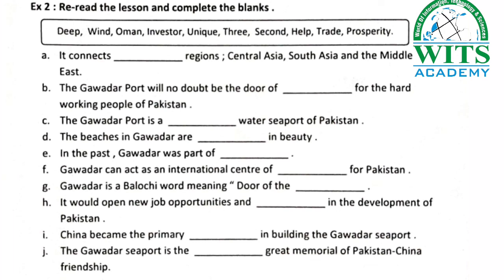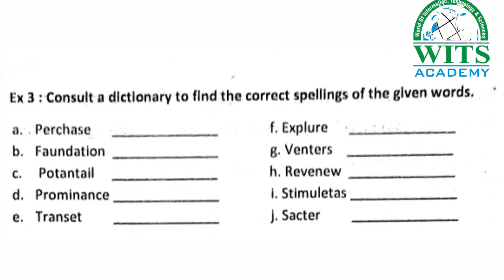You will have to re-read the lesson and complete the blanks by selecting the correct option. The next question is: consult a dictionary to find the correct spellings of the given words. I have given you the wrong spellings and you will have to find the correct spellings. These words are chosen from lesson number three. Thank you, students.